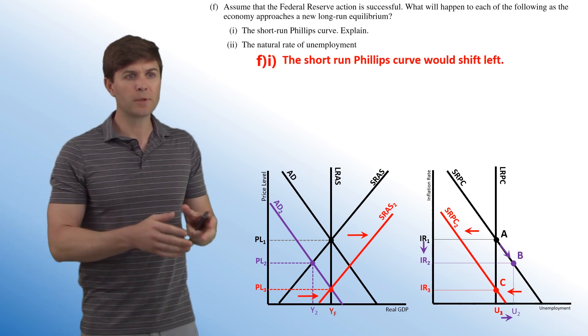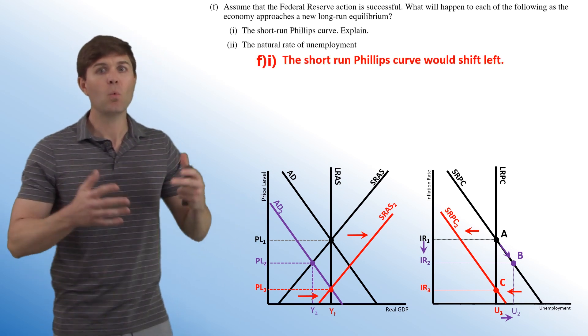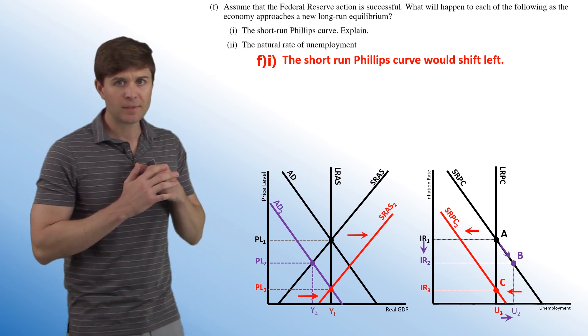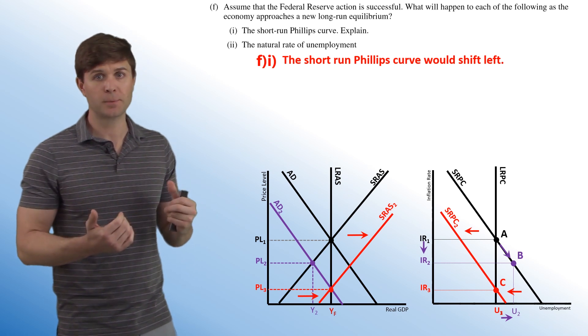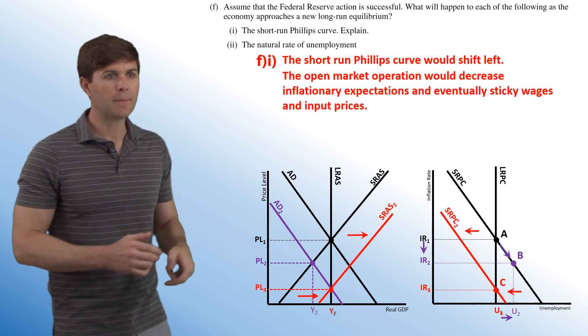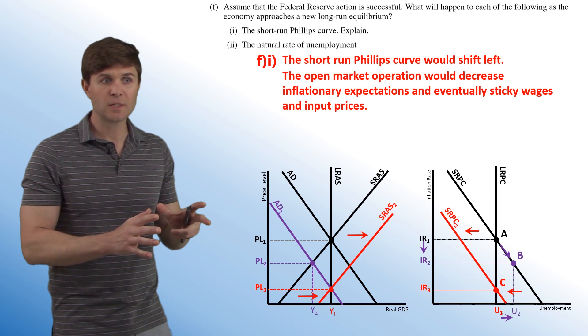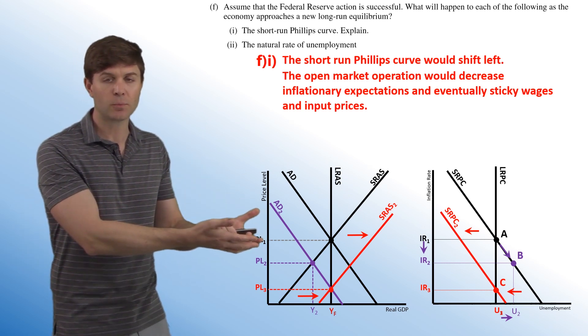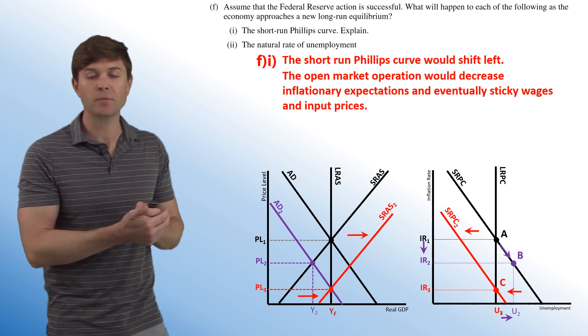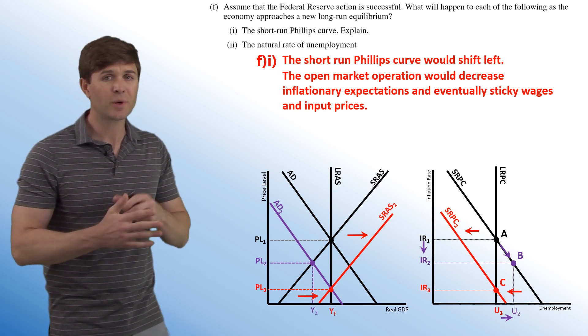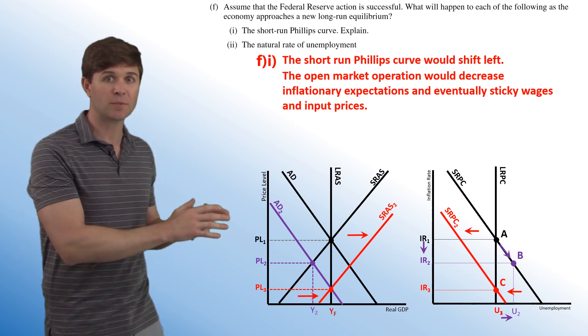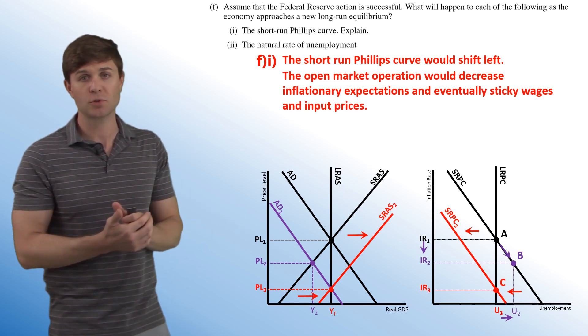So the short run Phillips curve would shift to the left. Why? And this is the difficult part of it. College board answer simply states that inflationary expectations have gone down. That's the easy explanation. So I included that, but I also talked about how eventually sticky prices and input prices would go down. That would cause aggregate supply to shift to the right, and the short run Phillips curve to shift left. So any way you want to handle that one will work, but make sure you're identifying something that shifted the aggregate supply curve that would shift the short run Phillips curve as well.